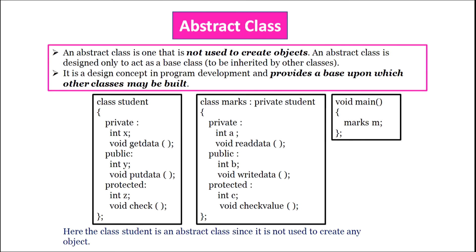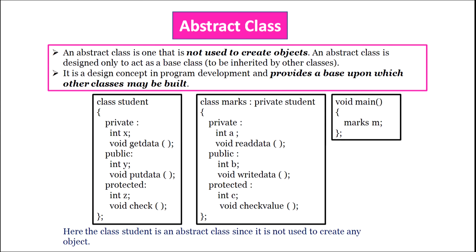Abstract class: an abstract class is one that is not used to create objects. It is designed only to act as a base class to be inherited by other classes. It is a design concept in program development that provides a base upon which other classes may be built. In this example, class Marks inherits class Student privately, and in main we create an object M of class Marks but no object of class Student — making Student an abstract class.